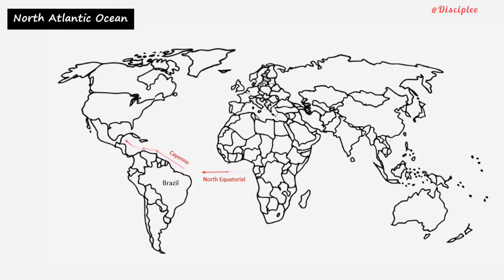Part of the current enters the Gulf of Mexico and emerges from the Florida Strait between Florida and Cuba as the Florida current. The rest of the equatorial water flows northwards east of the Antilles to join the Gulf Stream off the southeastern USA.